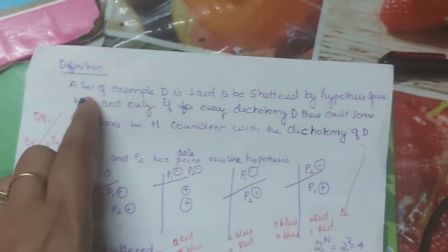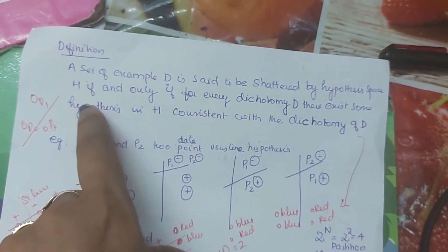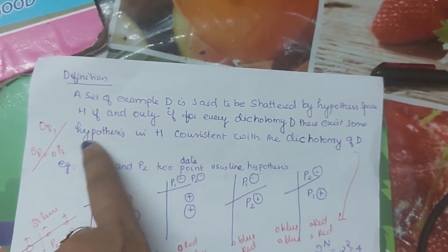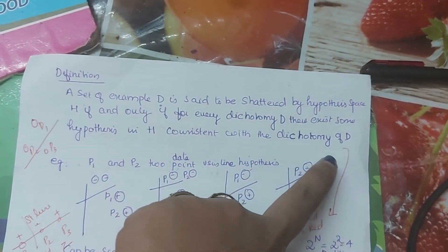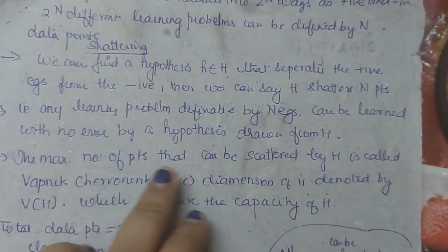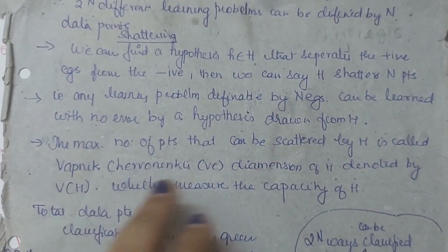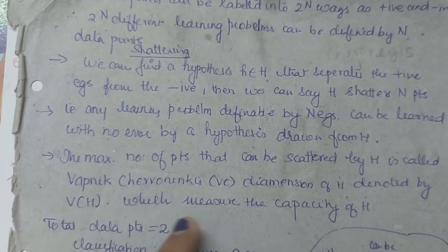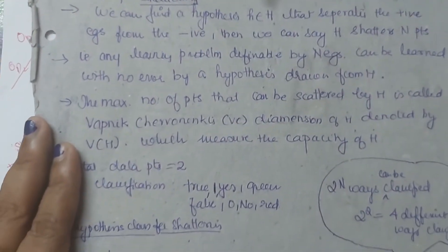So a set of example D is said to be shattered by a hypothesis space H if and only if for every dichotomy in D, there exists some hypothesis H consistent with the dichotomy of D. The maximum number of points that can be shattered by H is called VC dimension of H, denoted by VC of H, which is the measure of capacity of your hypothesis space.